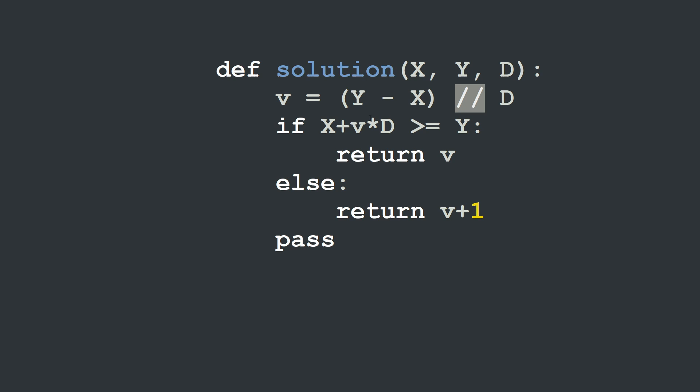And then we test if x plus v times d is greater than or equal to y. In this case we return v. If not, we will return v with an additional jump, v plus one.